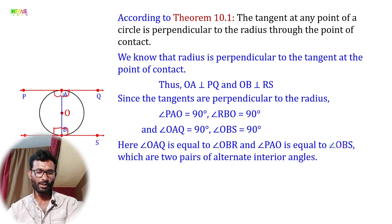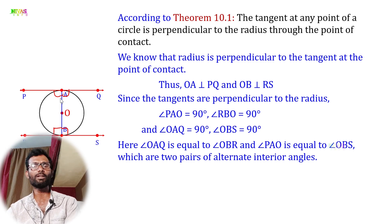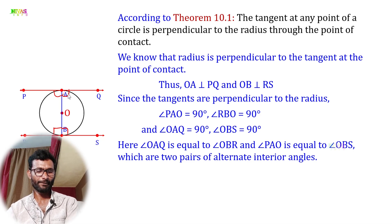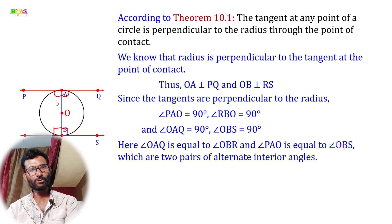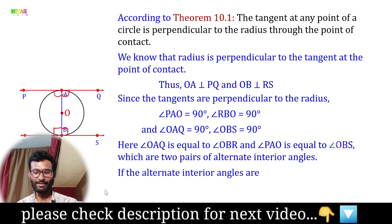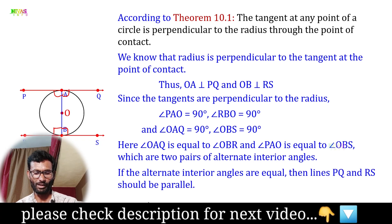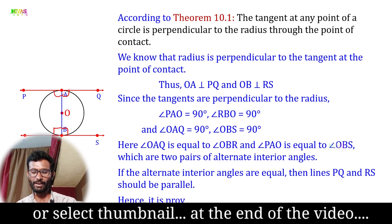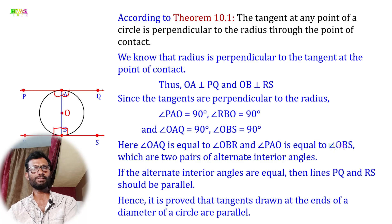Since the alternate interior angles are equal, the lines PQ and RS are parallel. Hence it is proved that the tangents drawn at the endpoints of a diameter of a circle are parallel.